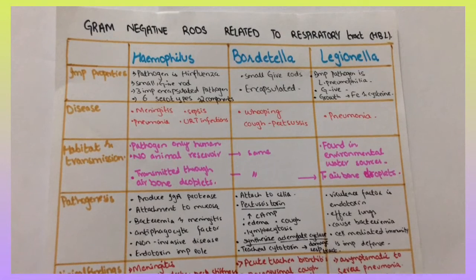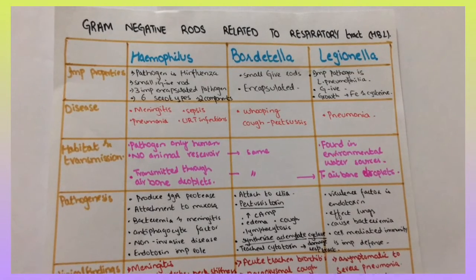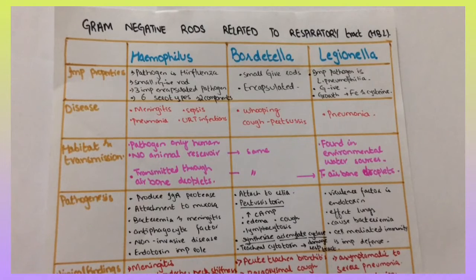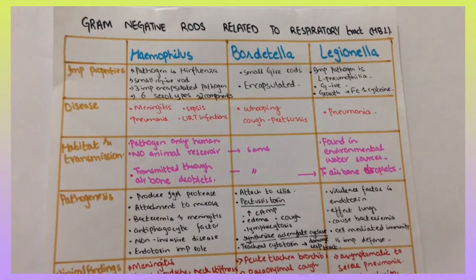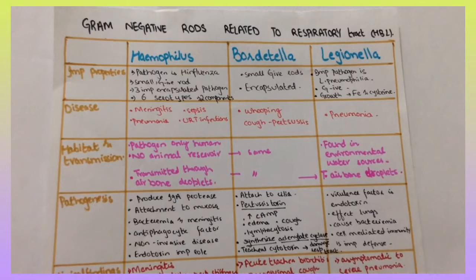Haemophilus pathogen is H. influenzae, it is a small gram-negative rod. Six serotypes, two components i.e. heme and NAD are required for growth in lab. These are the two additional components.